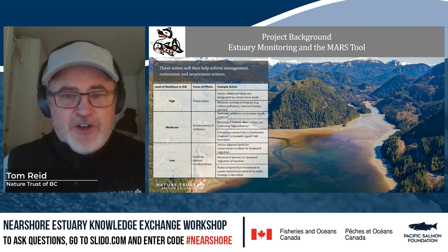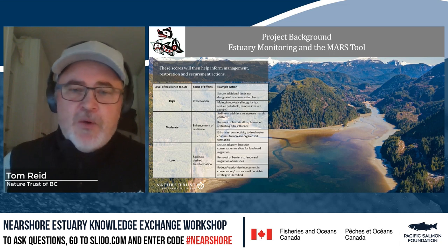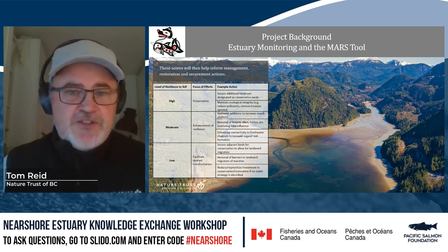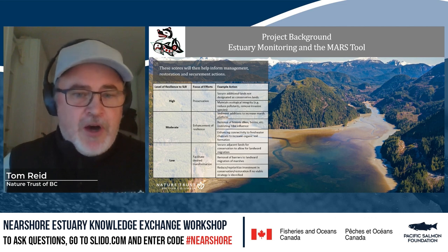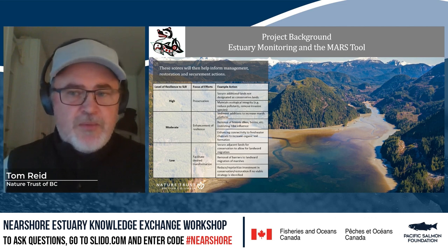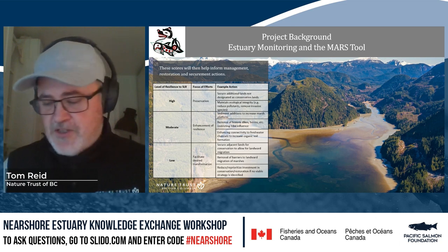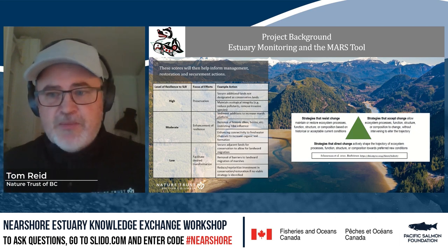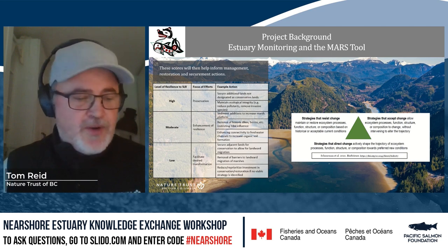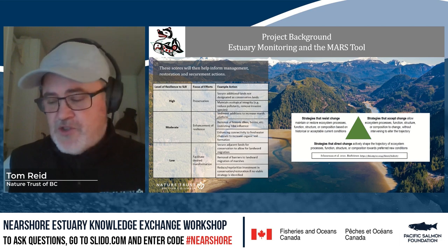With these scores, you can start looking at what actions can be done. High resilience sites call for maintaining ecological integrity and reducing invasive species. Moderate to low resilience suggests enhancement or major restoration. Low resilience scores indicate we should look at securing additional lands to allow for landward migration and removing barriers to that migration. There's also a framework around whether to resist change, accept change, or direct the change — similar to how we can use this tool to prioritize actions.